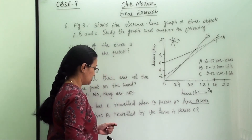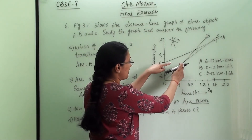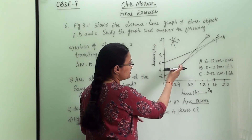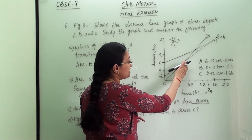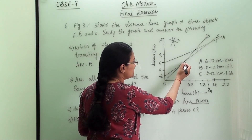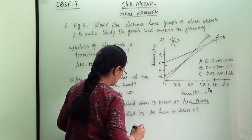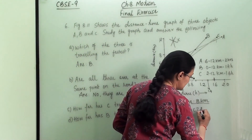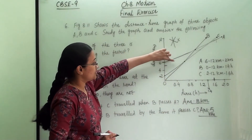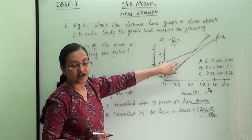The fourth question asks how far B has travelled by the time it passes C. B and C cross each other at a point on the graph. Since B is slightly faster than C, their kilometre values differ. At the point where B and C cross, extending to the y-axis shows that B has travelled 5 km.